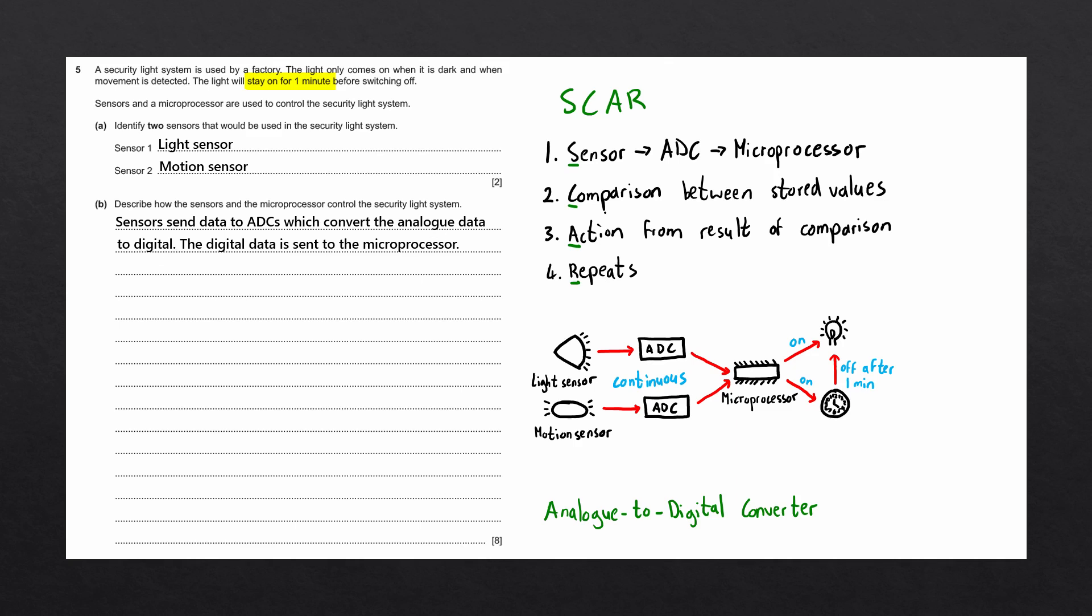The second step is to mention the comparison between the stored values. We can say that the microprocessor compares data to stored values. We then want to mention what the action is from the result of this comparison. There are two possible outcomes.